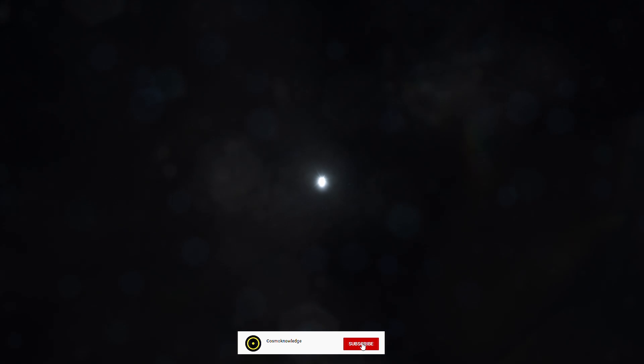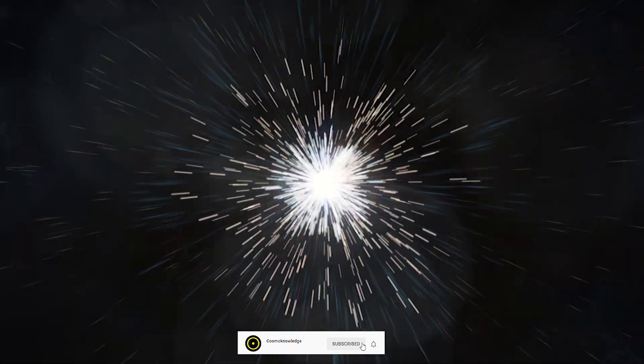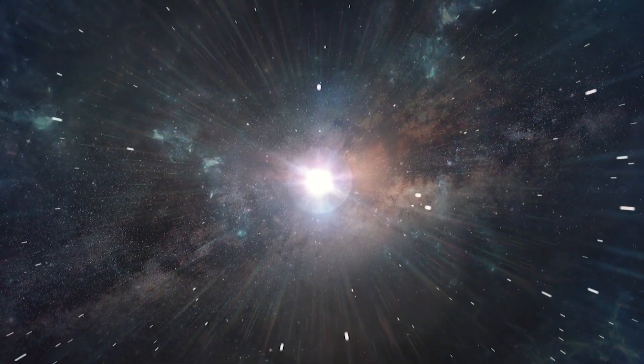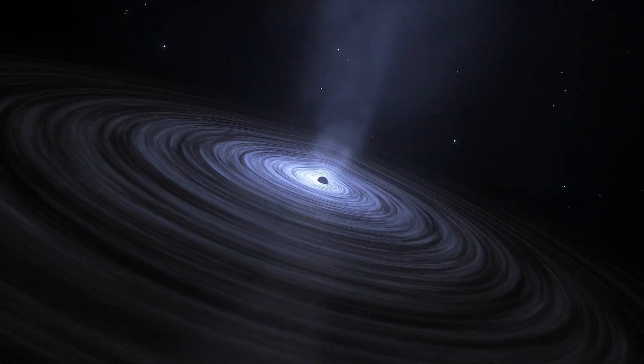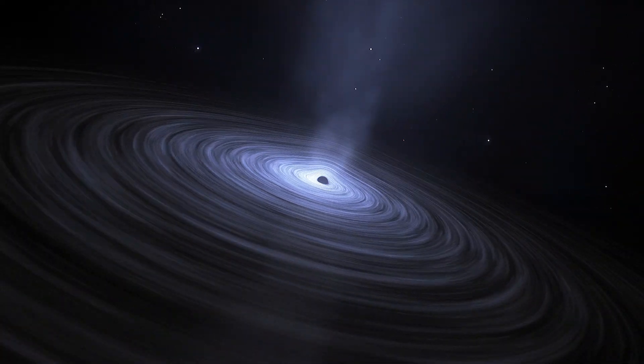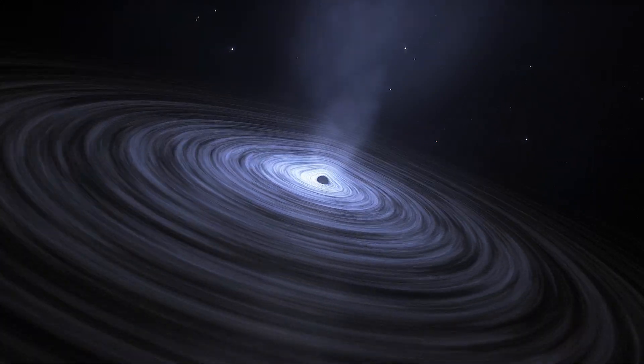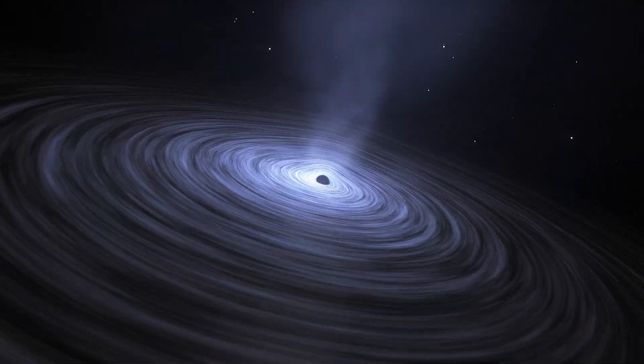Scientists theorized that the very first black holes formed from the collapse of the first stars. They had to have grown very quickly to reach such masses within the first 1 billion years of the universe.